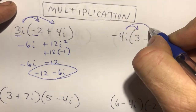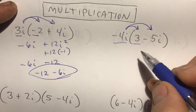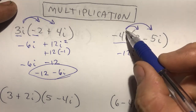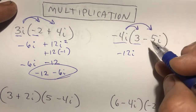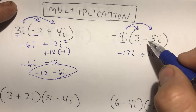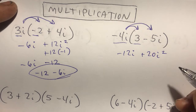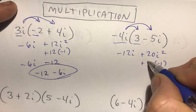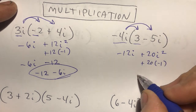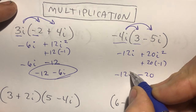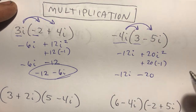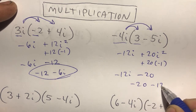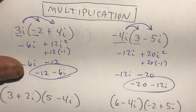Here's another multiplication: distributing negative 4i times 3 gives negative 12i. Then negative 4i times negative 5i: negative 4 times negative 5 is positive 20, but I've got two i's which is i squared. Since i squared is negative 1, I've got positive 20 times negative 1, which is negative 20. So I have negative 12i minus 20. Putting the real part first: negative 20 minus 12i.